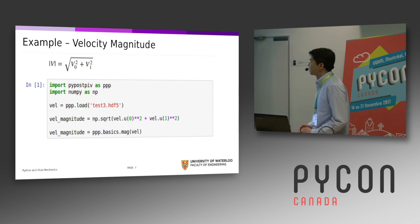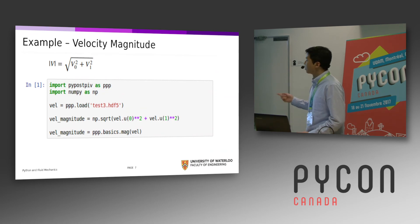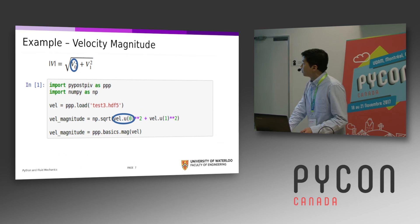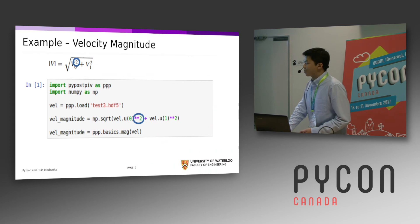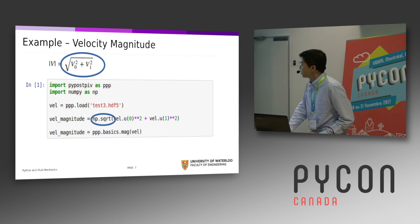Let's look at an example: velocity magnitude. Velocity magnitude in math is basically computed with the formula up there — it's the square root of the x-component of velocity squared plus the y-component squared. We can easily convert this into code: the x-component of velocity corresponds to velocity.u[0], squaring corresponds to squaring, and the square root corresponds to the square root. We've already implemented this function, so alternatively you can just call the magnitude function.